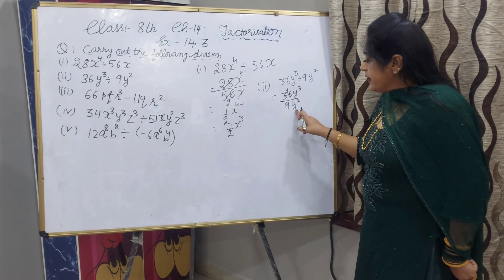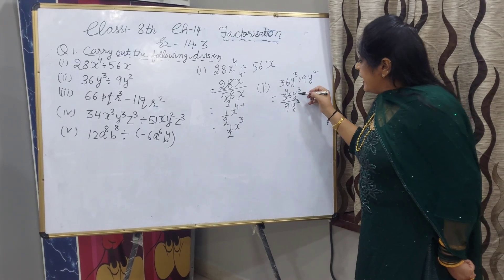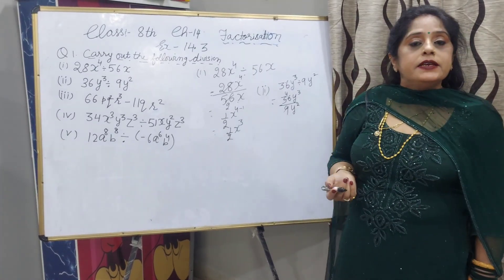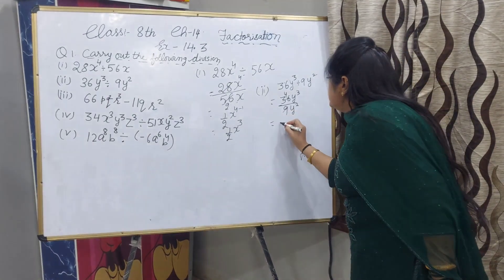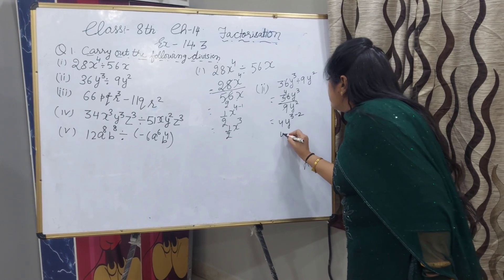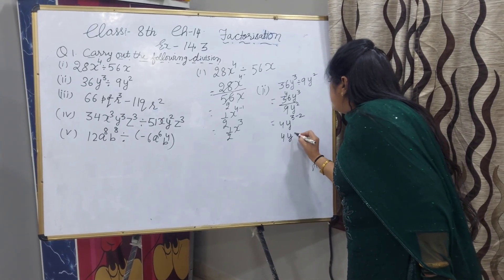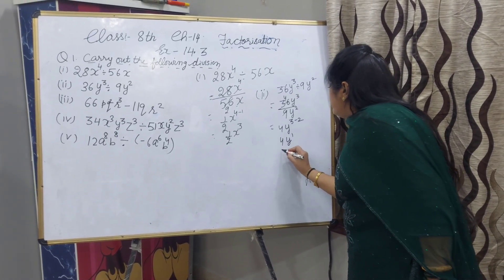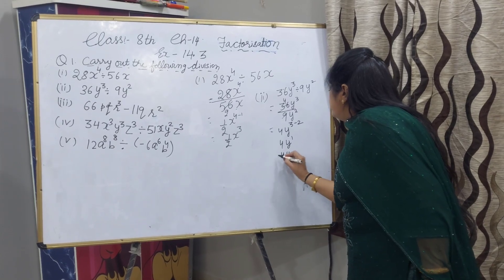y, this y. Bases are same. And if we divide, then power will be subtracted. Means 4y power 3 minus 2. 4y power 1 means 4y.